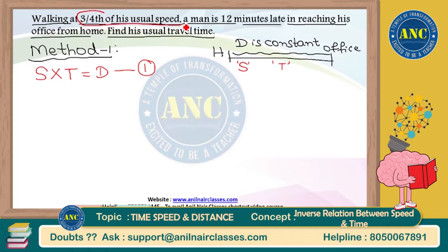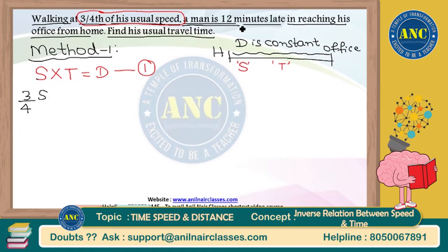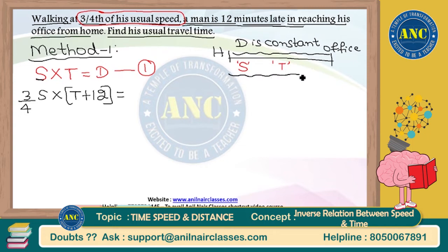Today I am traveling at 3/4 of my usual speed. Because I reduced my speed from S to (3/4)S, I will take more time to reach the office. The question says I am 12 minutes late, meaning I took T plus 12 minutes. But the distance from home to office does not change — it remains D. So the second equation is (3/4)S into (T + 12) equals D.